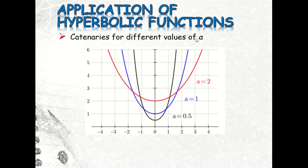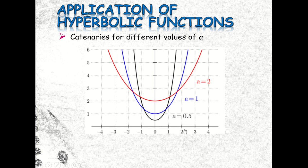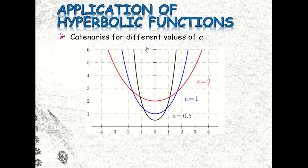For catenaries with different values of A: for A = 0.5, the span is shorter and the sag is greater. For A = 1, the span is wider. Remember the word 'span' — the distance from one point to another with respect to these curves. This term is common when solving problems involving catenaries.